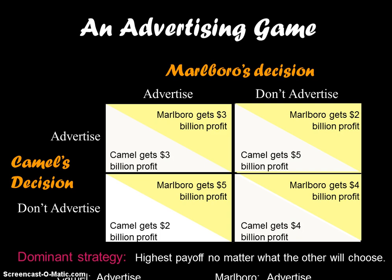Continuing on with our oligopoly lecture, right where we got cut off talking about game theory. I just wanted to take one more second to make sure you have some of this lingo down. Each player in the game is going to have what we call a dominant strategy and a dominated strategy. The dominant strategy means that strategy — either advertise or don't advertise in this game — that would be their two options. The dominant strategy is the strategy that has the highest payoff no matter what the other player in the game does.